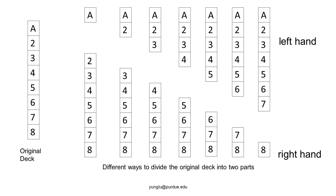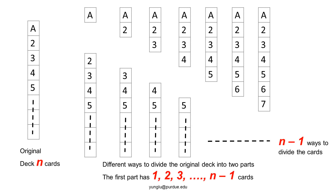Consider the situation when we have eight cards. We can divide the cards in different ways — starting with one card on the left hand and seven on the right, or two on the left and six on the right, and so on. In general, if there are N cards originally, there are N-1 ways to divide the cards.